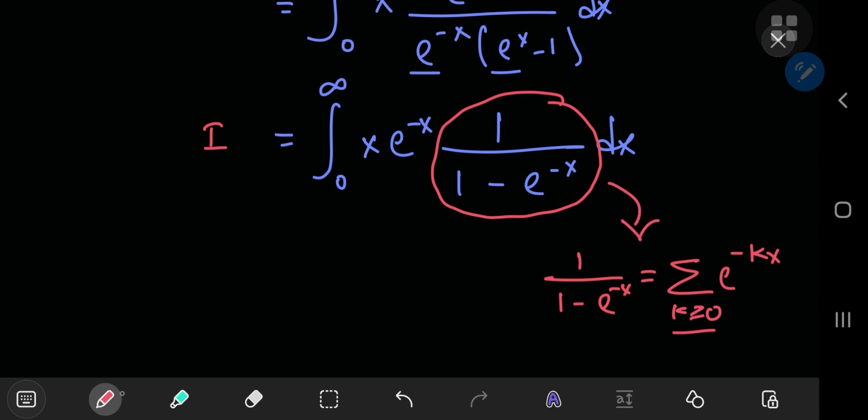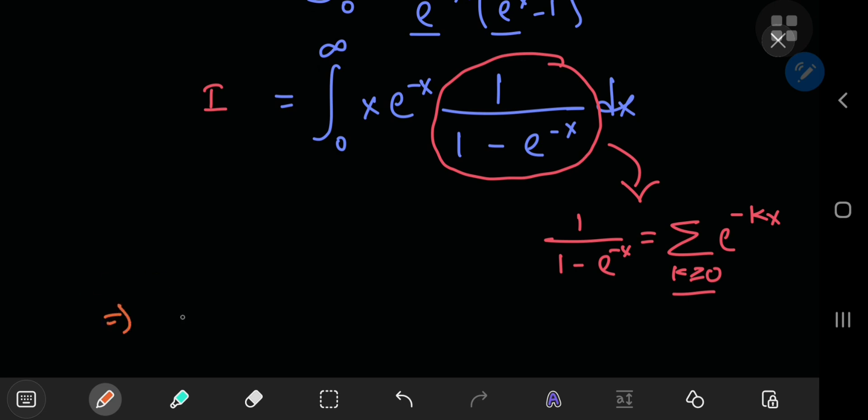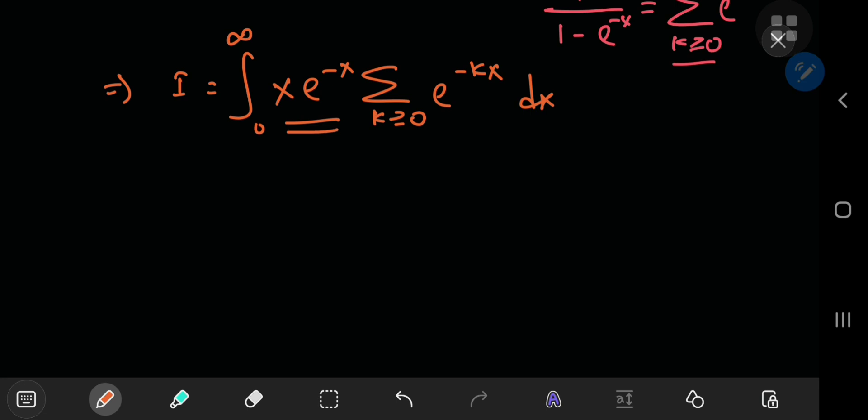Replacing this term by its series expansion, we have i equal to the integral from 0 to infinity of x times e to the negative x times the sum over k of e to the negative kx. Because these two terms outside the sum are independent of k, we can slip them into the sigma notation.